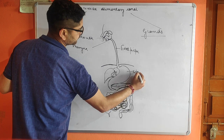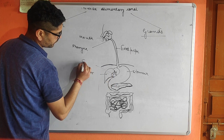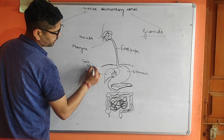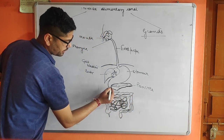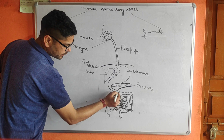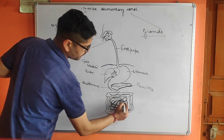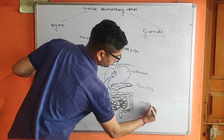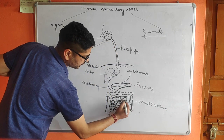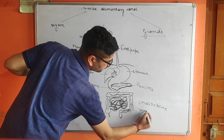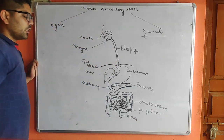This portion is called the stomach. This structure is the liver, and this is called the gallbladder. This is the pancreas. The stomach ends here, and from here the small intestine starts. This C-shaped portion is called the duodenum. These highly coiled, thinner structures are called the small intestine.